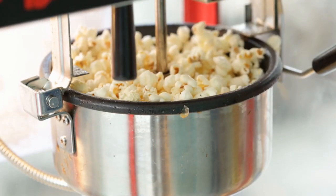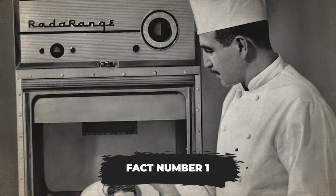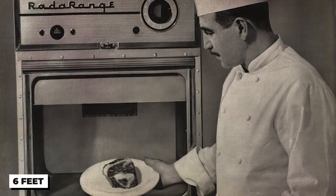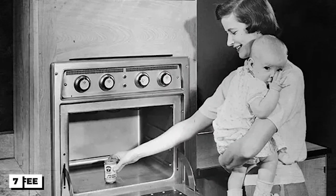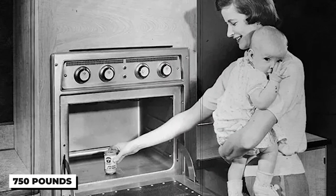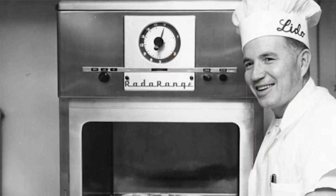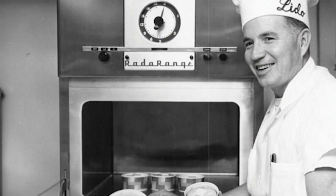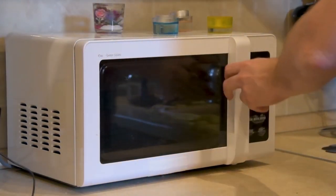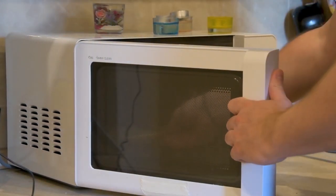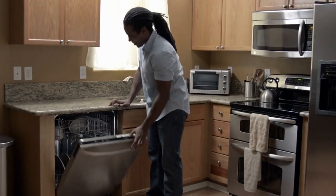So grab your popcorn and maybe put it in the microwave, because these facts are about to pop. Fact number one: Did you know that the first microwave oven was almost six feet tall and weighed a whopping 750 pounds? That's right. Introduced in 1947, the Radar Range was a giant compared to today's compact kitchen companions.